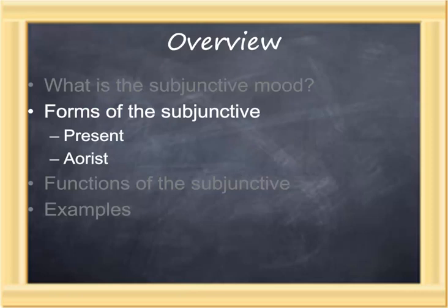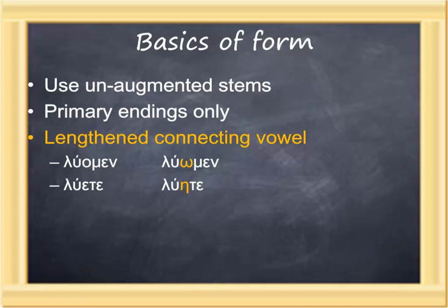How is the subjunctive formed? Like the participle, the subjunctive uses unaugmented stems. So when the present stem is used, it'll look like the present stem; when the aorist stem is used, the augment will be gone. Because it's a non-augmented form, only the primary set of personal endings will be used. The key for identifying a subjunctive is the presence of a lengthened connecting vowel — instead of omicron or epsilon, the connecting vowel is omega or eta.